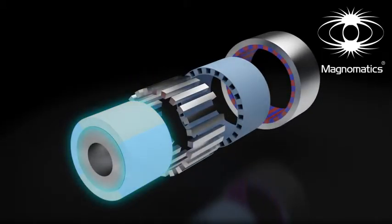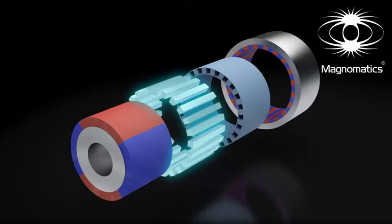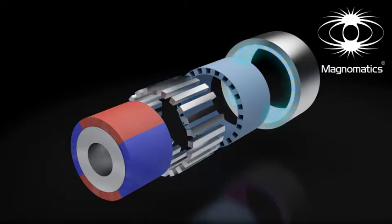The inner ring consists of a low number of magnets. This will be connected to the high-speed shaft. The middle ring consists of a number of steel segments held within a mechanical structure and is typically connected to the low-speed shaft. The outer ring, consisting of a high number of magnets, is usually held stationary.